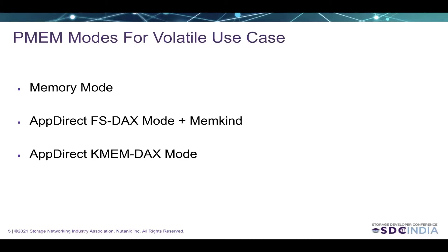That's the introduction. Now let's go through persistent memory modes for volatile use cases. Mainly there are three volatile modes: memory mode, AppDirect FS DAX mode with the MemKind library, and AppDirect KMDAX mode.